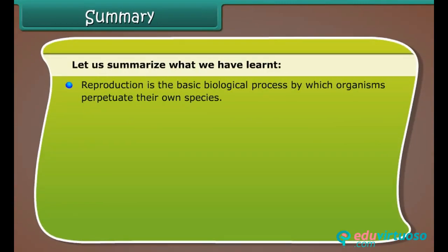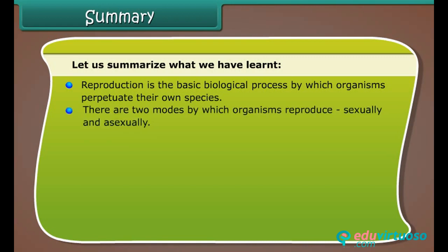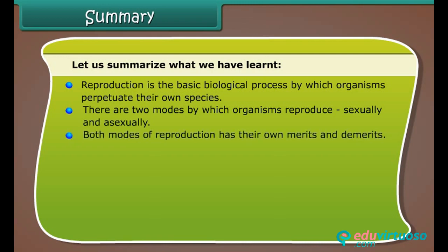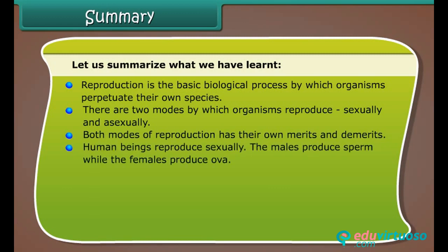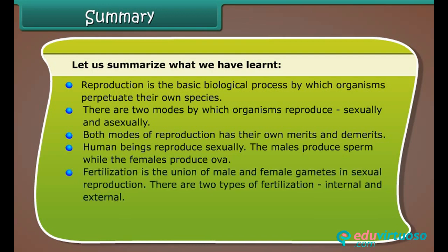Reproduction is the basic biological process by which organisms perpetuate their own species. There are two modes by which organisms reproduce: sexually and asexually. Both modes have their own merits and demerits. Human beings reproduce sexually — males produce sperm while females produce ova. Fertilization is the union of male and female gametes. There are two types of fertilization: internal and external.